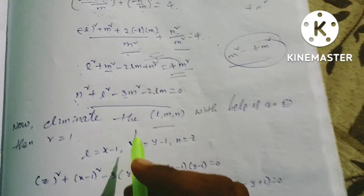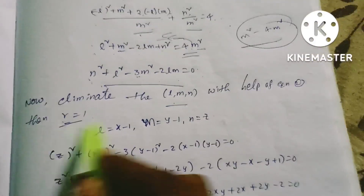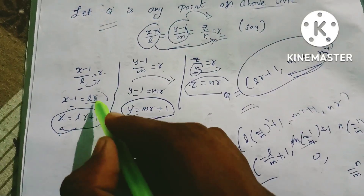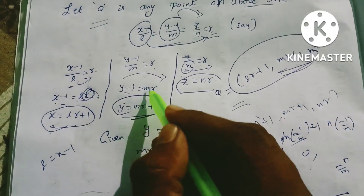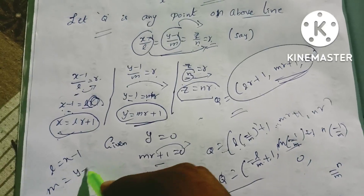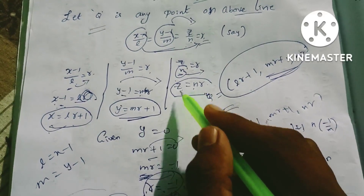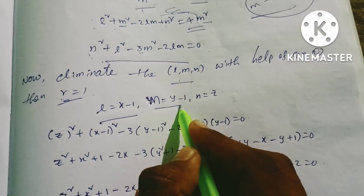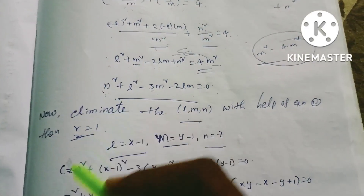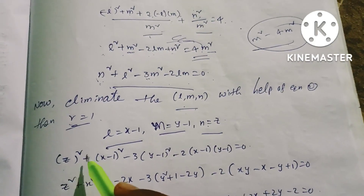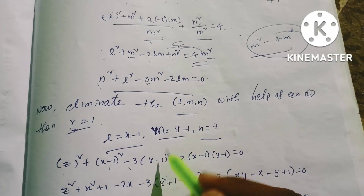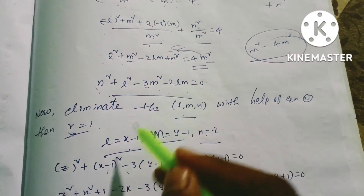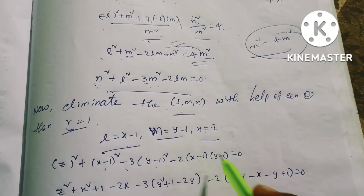With the help of equation 2, r = 1. If r = 1, then L = x - 1, M = y - 1, and N = z. Substituting: N² = z², L² = (x-1)², 3M² = 3(y-1)², and 2LM = 2(x-1)(y-1). So the equation becomes z² + (x-1)² - 3(y-1)² - 2(x-1)(y-1) = 0.